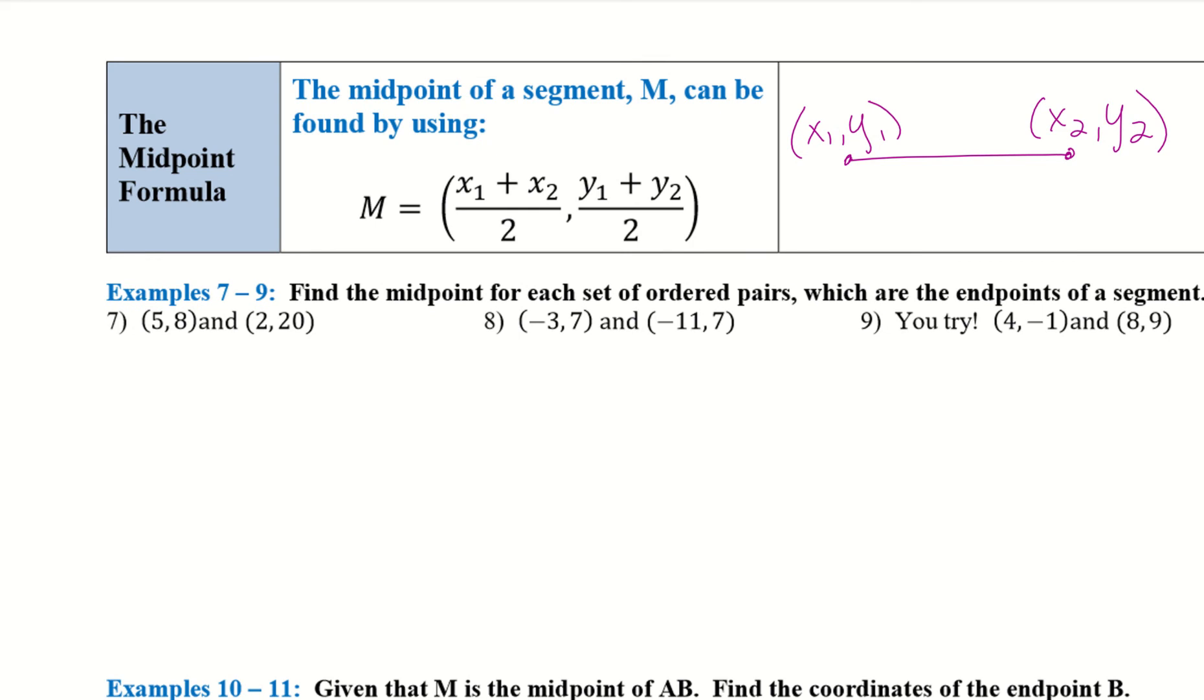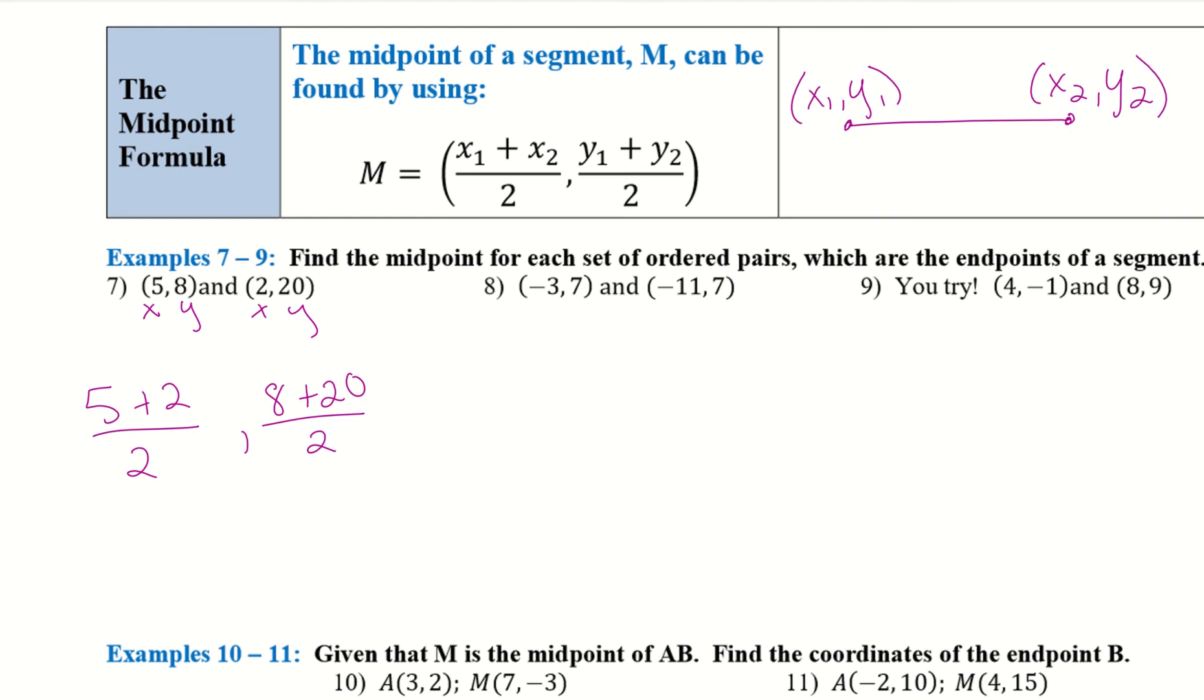So our first one, we have 5, 8 and 2, 20. So remember it's x, x and y, x and y. So x1 is 5, plus x2 is 2, and I'm dividing that by 2. Then my y term is going to be 8 plus 20 all over 2. So I now have 7 over 2, 28 over 2, and then I want to reduce as far as I can. So 7 over 2 can't be simplified to a whole number. It can be a decimal. And then 28 divided by 2 is 14. So the midpoint of these two points, 5, 8 and 2, 20 is 7 over 2, 14.